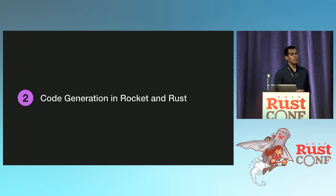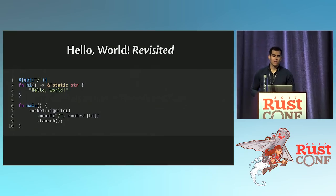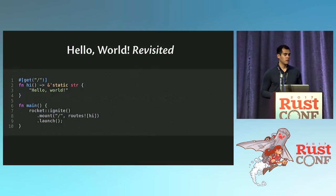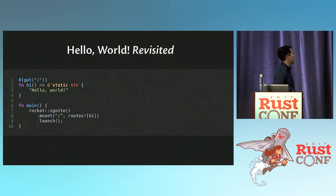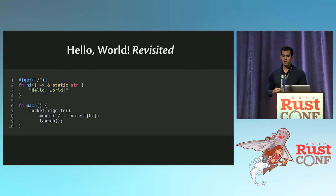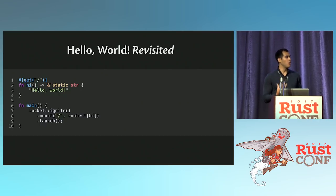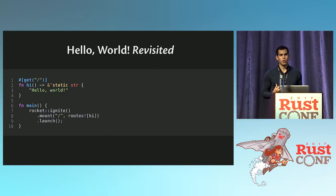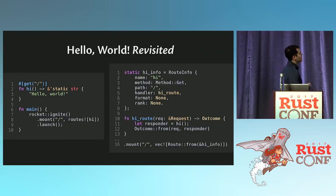Next up is code generation in Rocket and Rust. Let's go back to our Hello World example. We have our GET route for the root path, and then we have our main function. I've restyled it a bit because I need to fit code in this slide. So what code does Rocket generate when you write this program? Well, it generates this code.